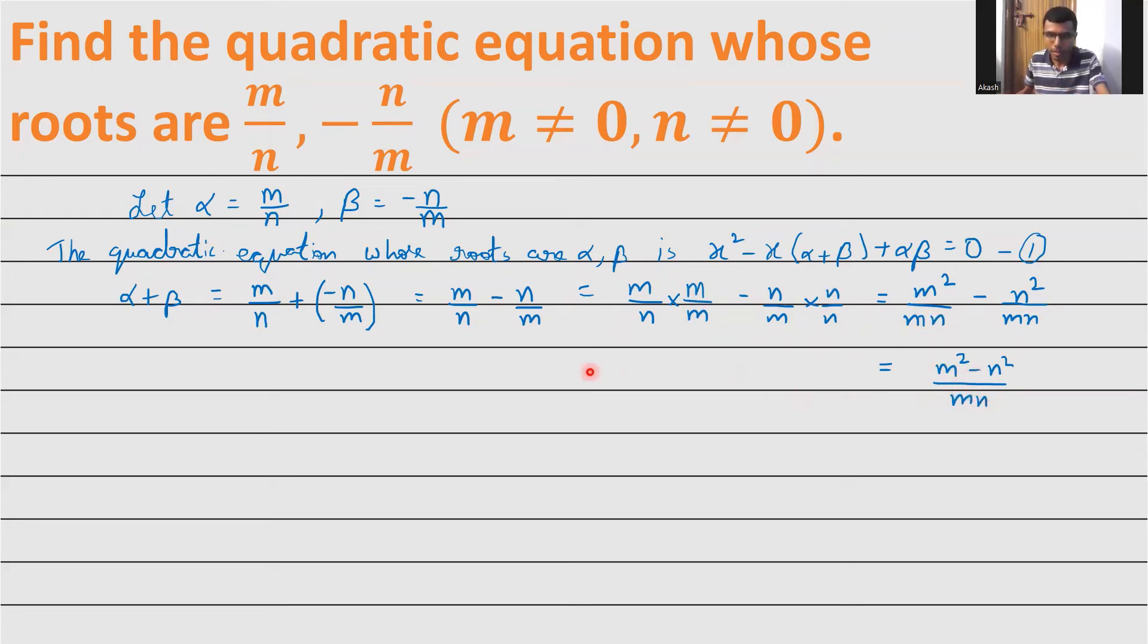Now let's find alpha beta. Alpha beta is m/n times -n/m. Here n and n cancel, m and m cancel, and we're left with -1 because of the minus sign. The final answer is -1.